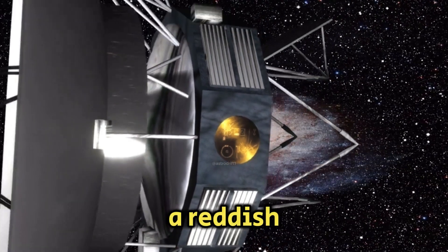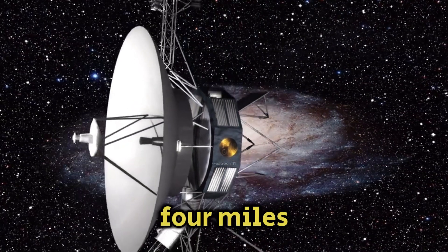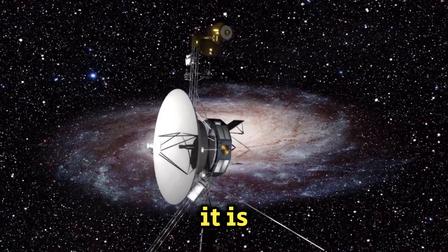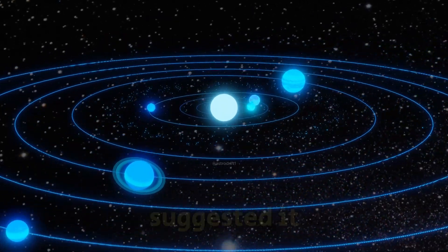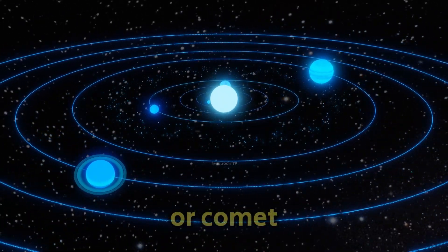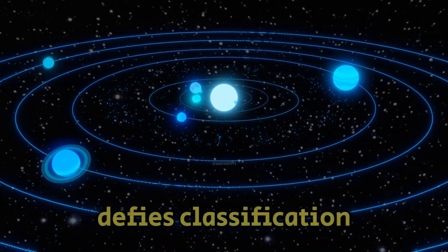Described as a reddish, cigar-shaped rock, it's about four miles wide and ten times longer than it is wide, a shape unlike any known asteroid or comet in our solar system. While some suggested it could be an asteroid or comet, its behavior defies classification.